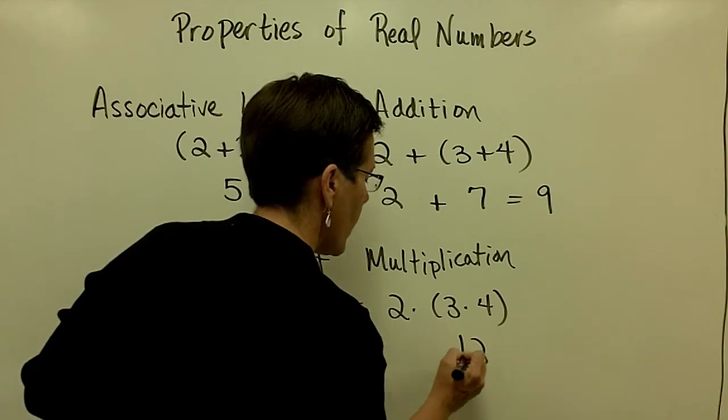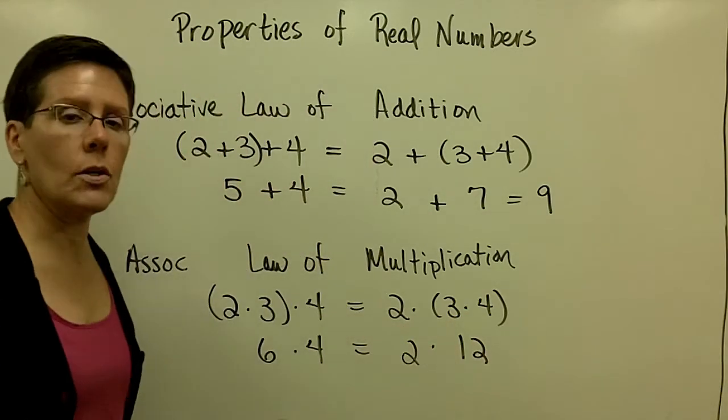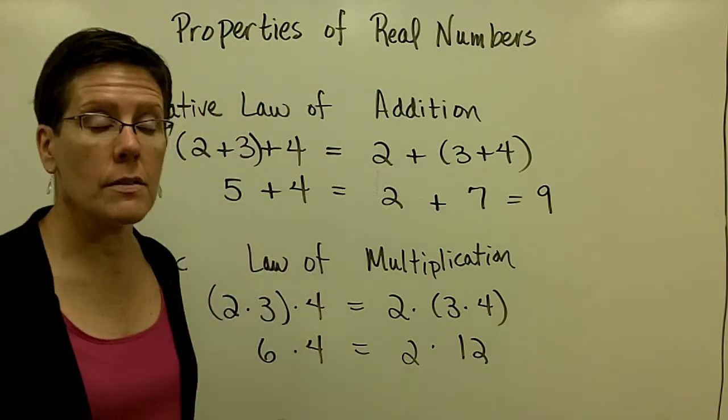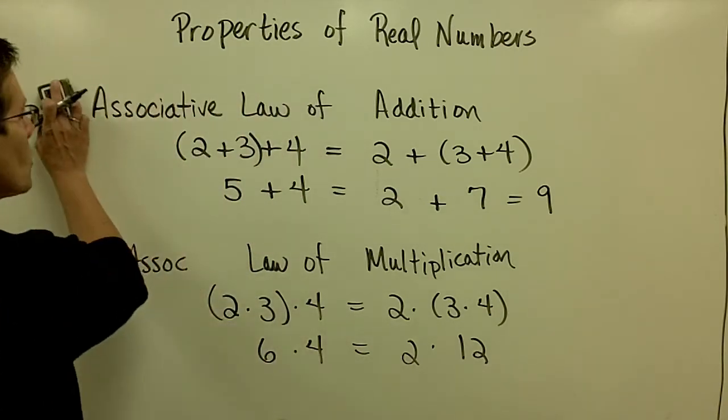Over here, parentheses first, 12 times 2, also 24. The associative laws have to do with the placement of parentheses in the same grouping of terms and or factors.